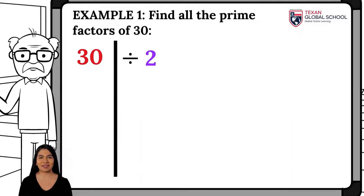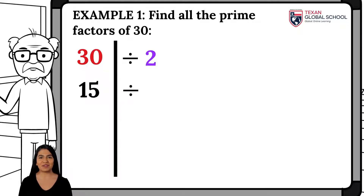As we can see, 30 is divisible by 2 since it ends in 0. Therefore, we place the 2 on the right side and divide 30 by 2, obtaining 15. Now we look for a prime number capable of dividing 15. A number is divisible by 3 if the sum of its digits is divisible by 3. Adding 1 and 5 results in 6, and 6 is divisible by 3.